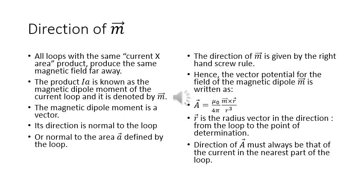The product IA is known as the magnetic dipole moment of the current loop, denoted by vector m. The magnetic dipole moment is a vector; its direction is normal to the loop, defined by the right-hand screw rule. Hence, the vector potential for the field of the magnetic dipole m is written as A = μ₀/4π · (m × r) / r³, where r is the radius vector from the loop to the point of determination. The direction of A must always be that of the current in the nearest part of the loop.